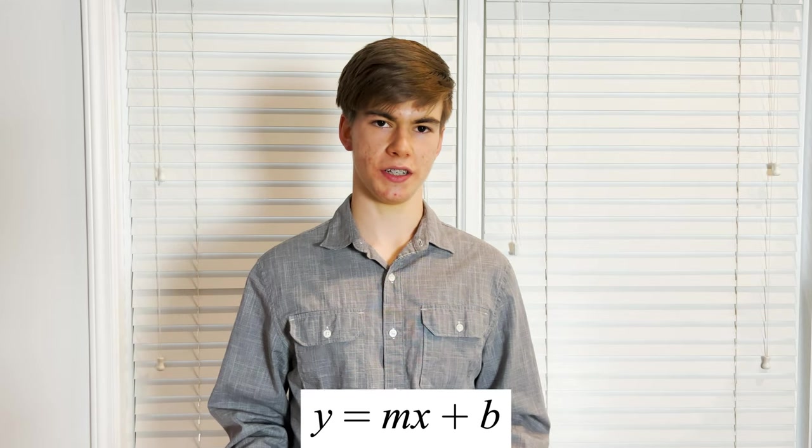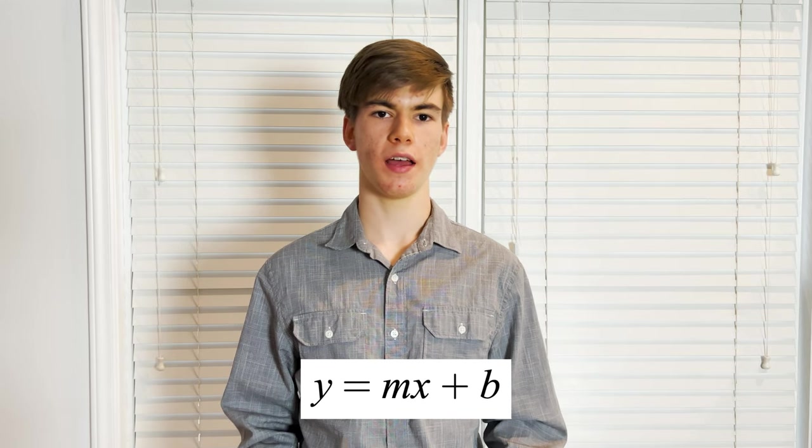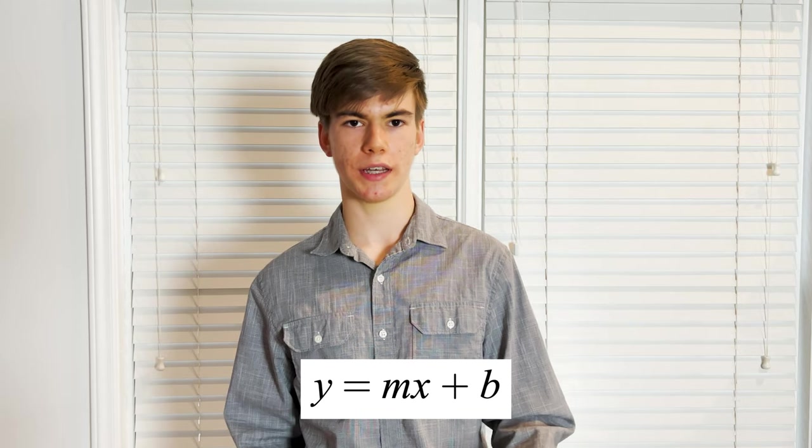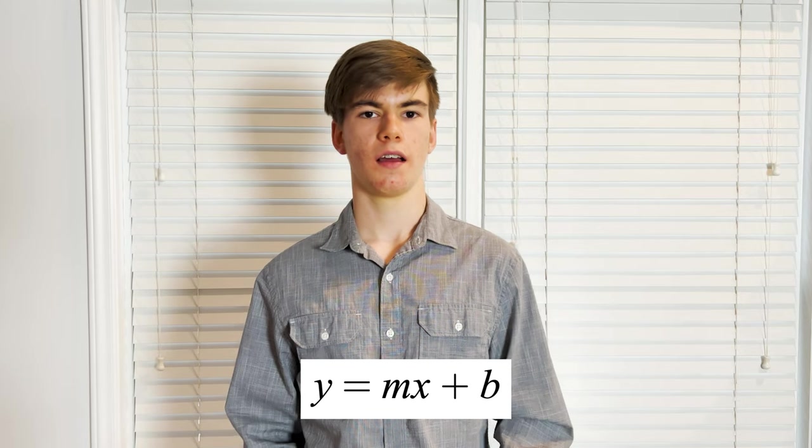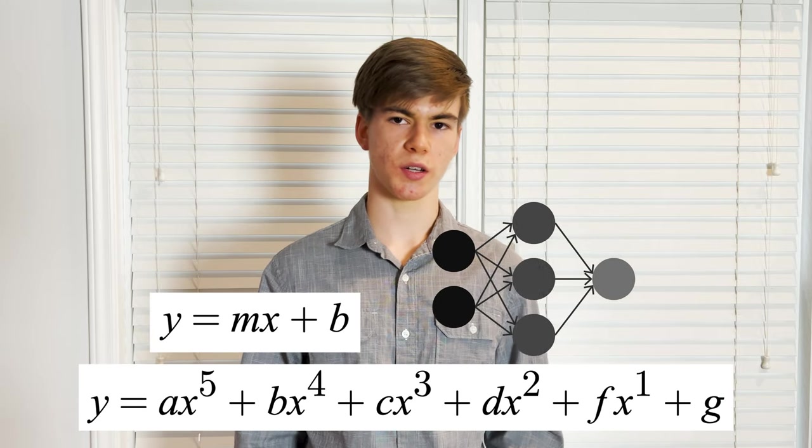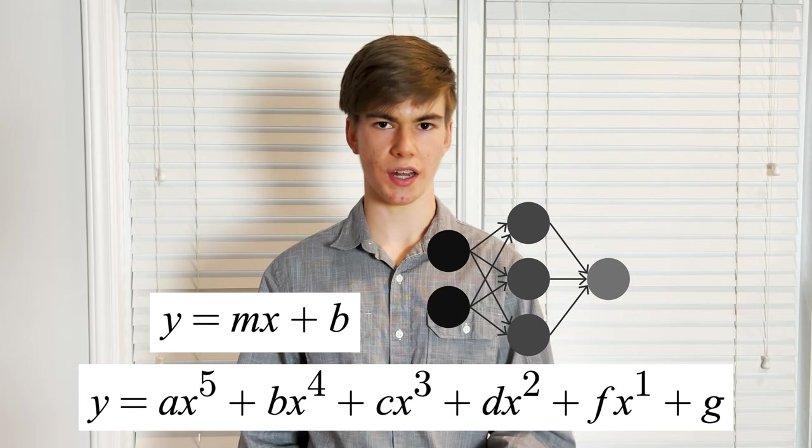With linear regression, we adjust m, the slope, and b, the y-intercept, to minimize the difference between the actual data and the prediction. Similarly, with polynomials, we adjust the constants. And with neural networks, we adjust the weights to minimize this error.